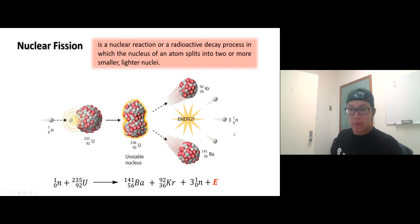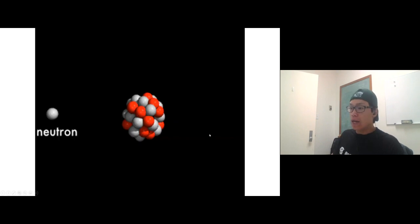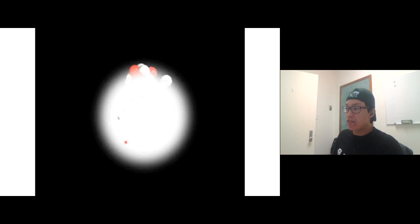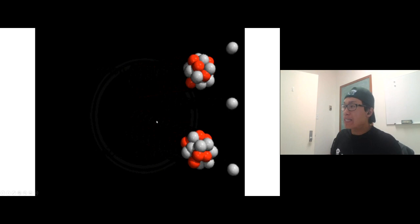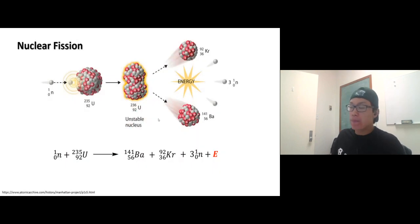A neutron hits uranium-235, becomes uranium-236, and that's fission releasing large amounts of energy. Here's the thing though: these three neutrons that come out are problematic. The three neutrons can induce up to three more fissions. Each one can do one more fission and each fission will make three more neutrons.